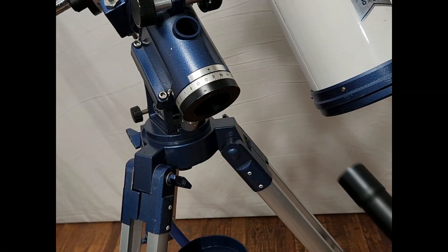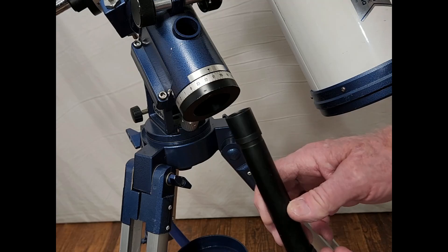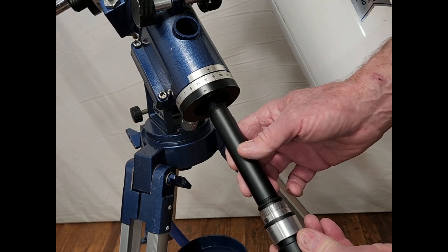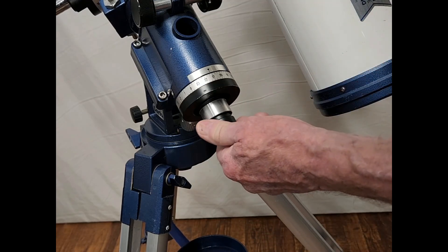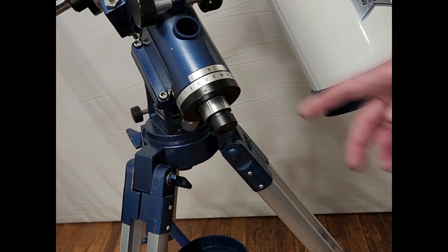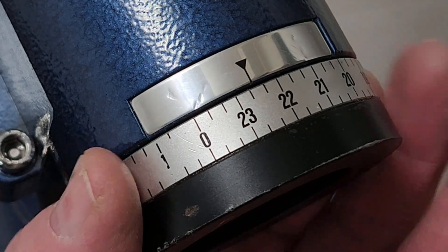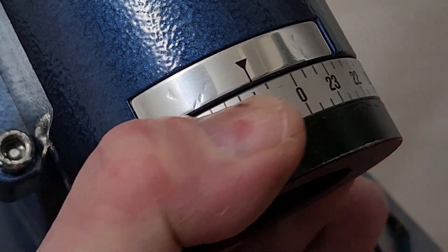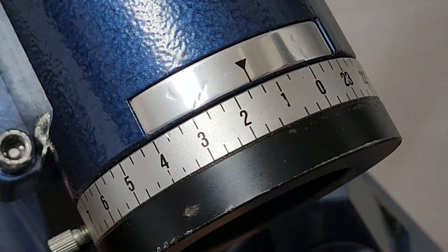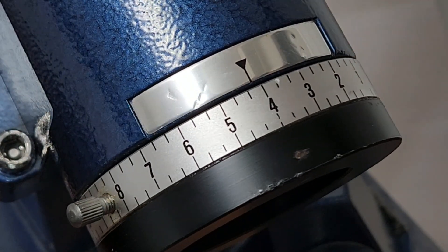The right ascension axis is hollow so you can put a finder or a polar axis finder in there. Here's the right ascension setting circle. There's how you adjust it. Let's loosen up the clamp and turn it. You see, there it goes.